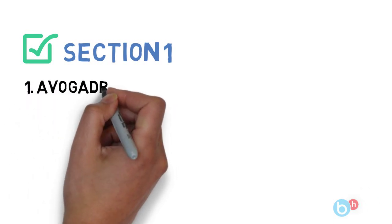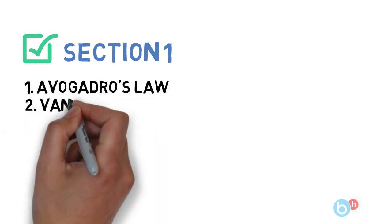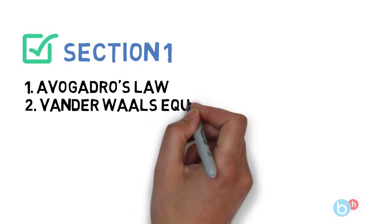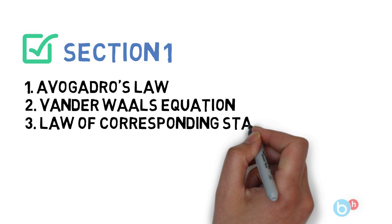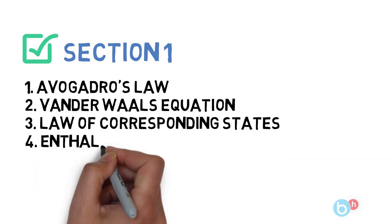Talking about the first section, in the very first section we'll be discussing about 4 topics: first is Avogadro's Law, second is Van der Waals Equation, third is Law of Corresponding States, fourth is Enthalpy and Specific Heat of a Gas Mixture. So guys, you have to practice these 4 topics for section 1.